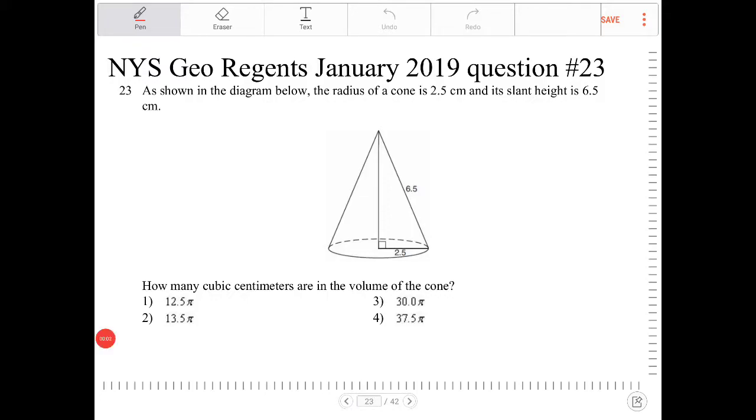As shown in the diagram below, the radius of a cone is 2.5 centimeters, and its slant height is 6.5 centimeters. How many cubic centimeters are in the volume of the cone?